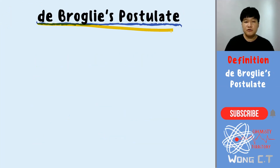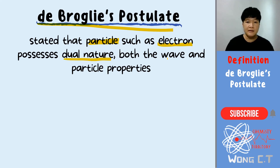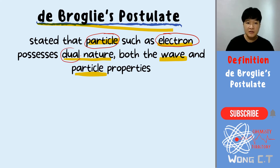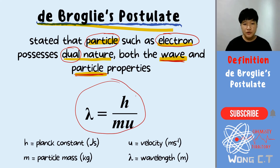De Broglie's postulate states that particles such as electrons possess a dual nature — that is, wave and particle properties. In Bohr's atomic model, Bohr proposed that the electron is a particle. So when the electron is a particle, it must have both aspects of the dual nature: wave property and particle property. The formula that de Broglie used to prove this postulate is as given.